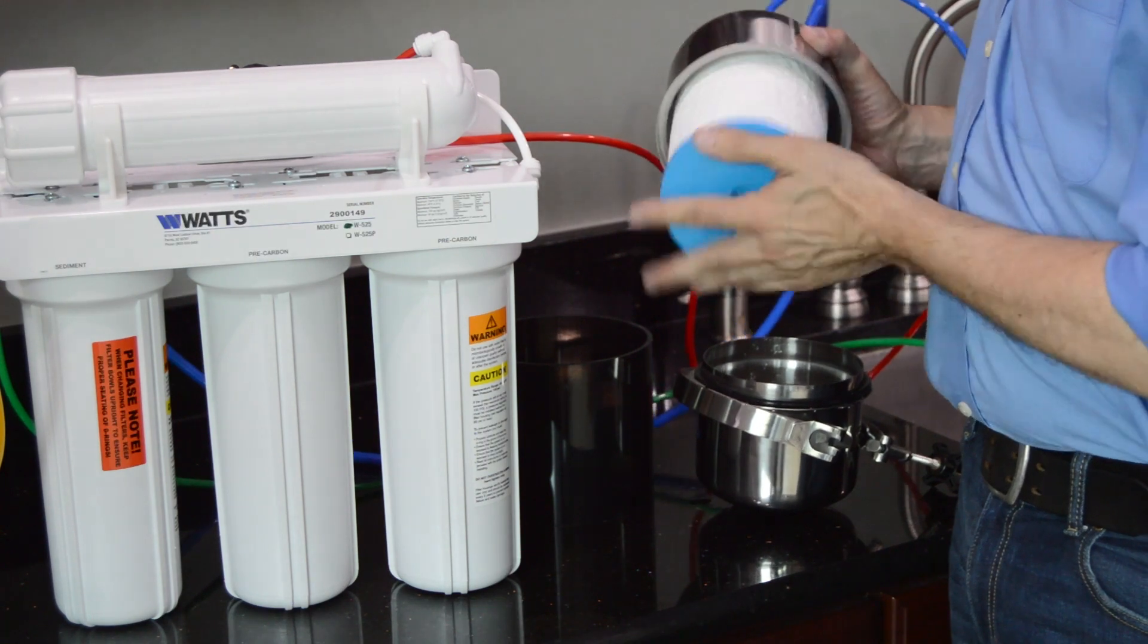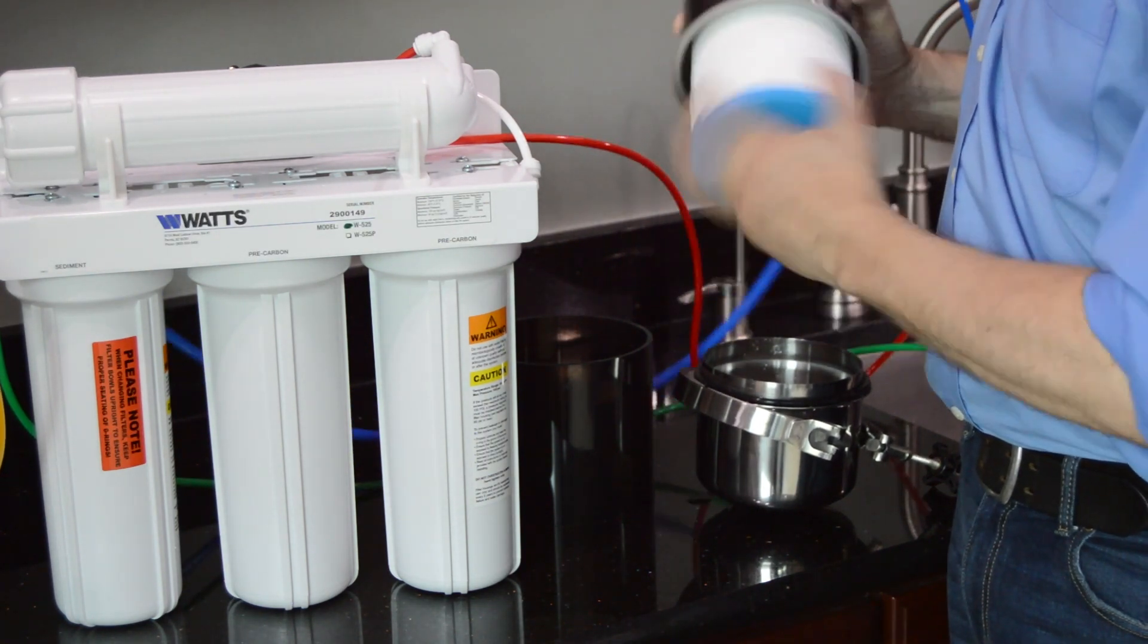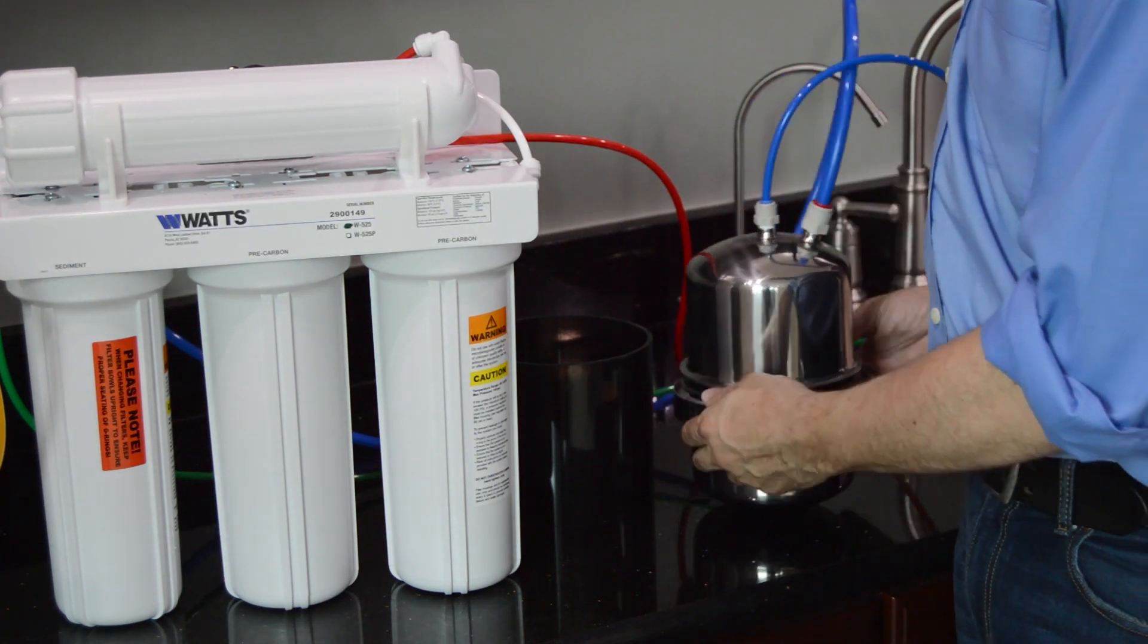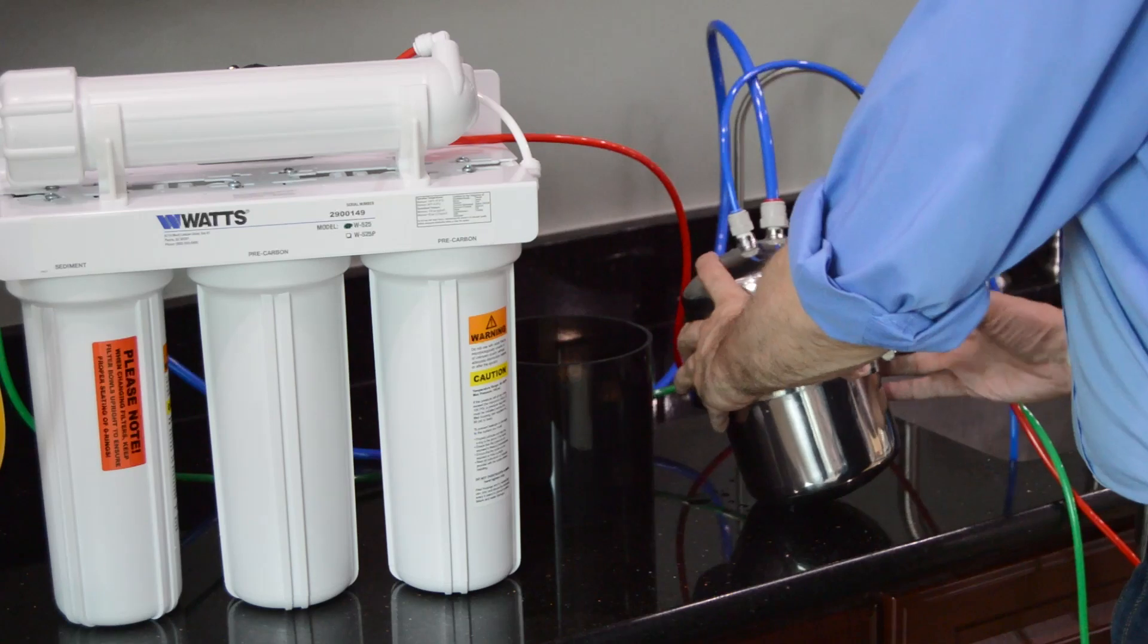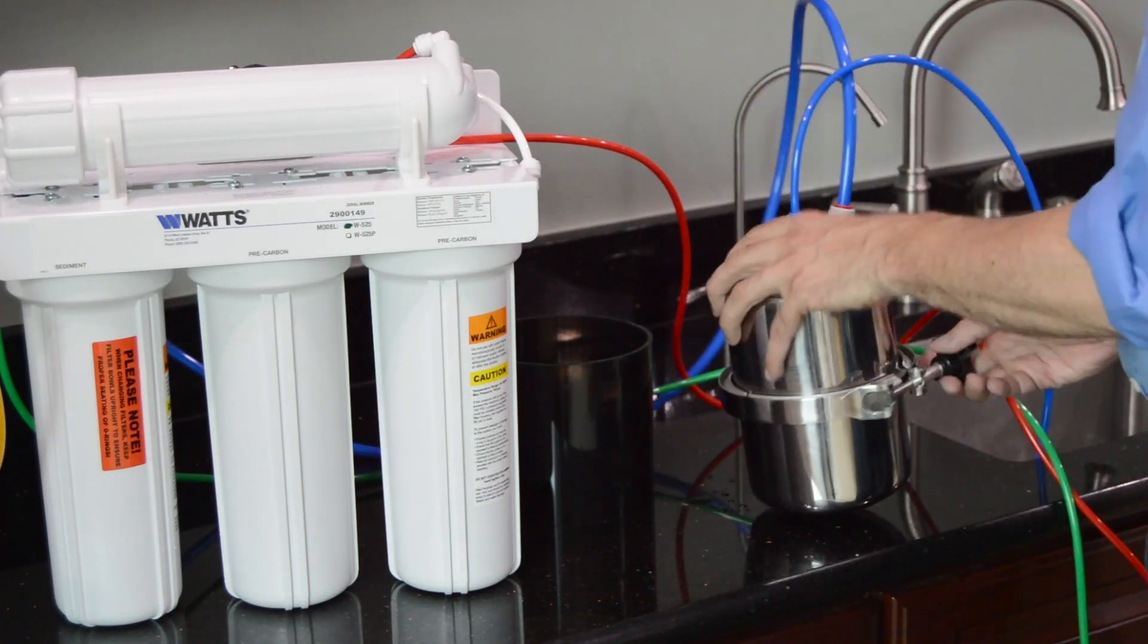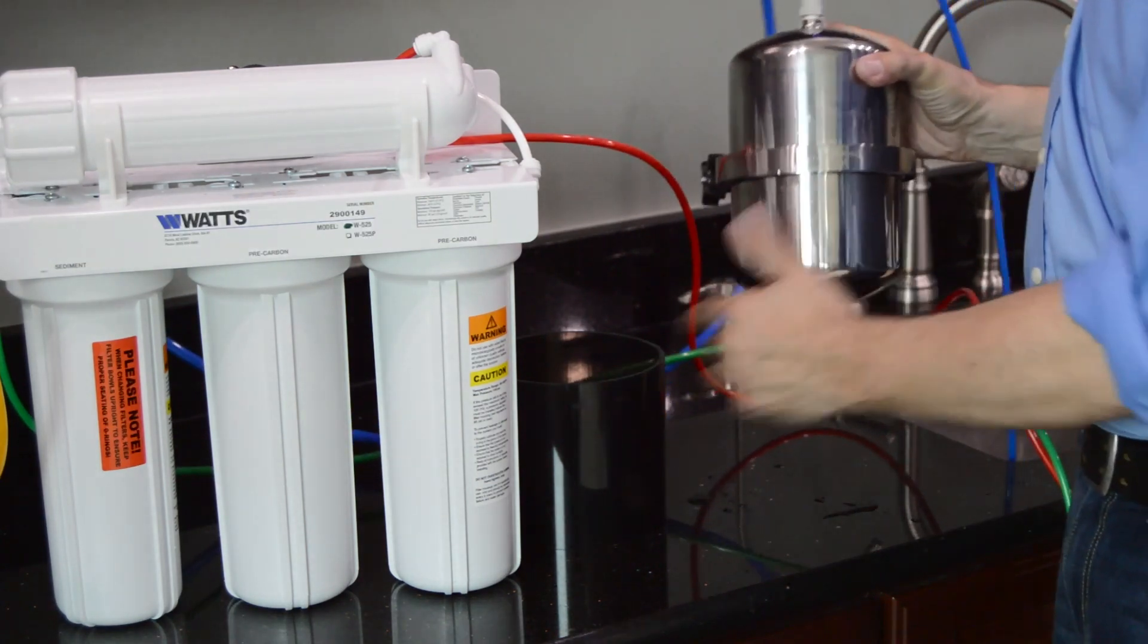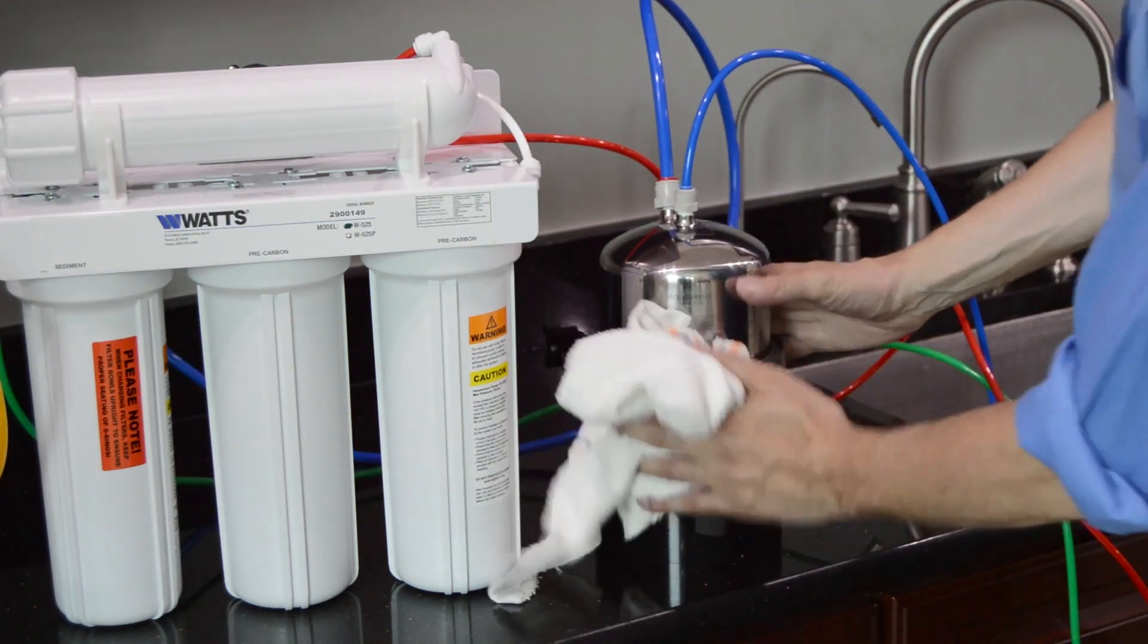Insert the new filter into the system housing by turning clockwise. Reconnect the system housing and tighten the locking v-band. Place the system back in its base if necessary and dry off the housing.